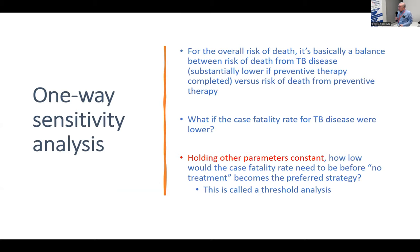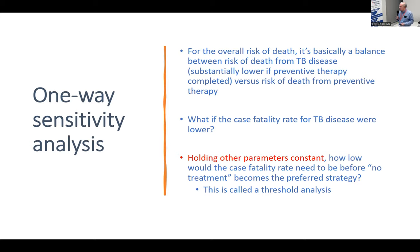Now I'll talk about one-way sensitivity analysis. Fundamentally, the balance involves the risk of death from TB disease versus the upfront risk — rare but known — of death with preventive treatment. One question we can ask is: what if the case fatality rate for TB disease were lower? How low would it have to be before we'd change our decision — before it would actually be better not to treat? This type of analysis is known as threshold analysis.